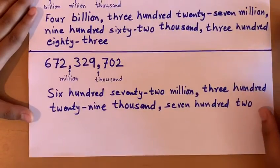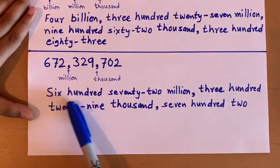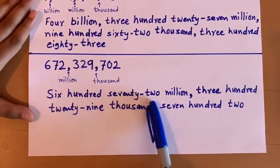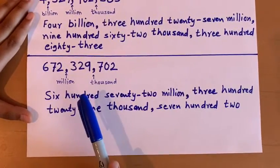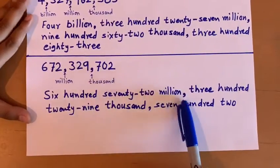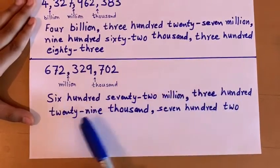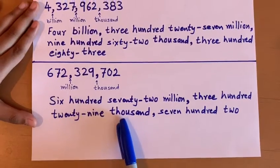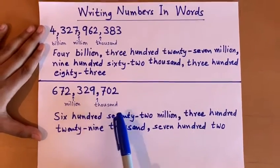To write this in words, we write six hundred seventy-two million, and since there is a comma in the number, we put a comma in the word, three hundred twenty-nine thousand, and since there is a comma in the number,